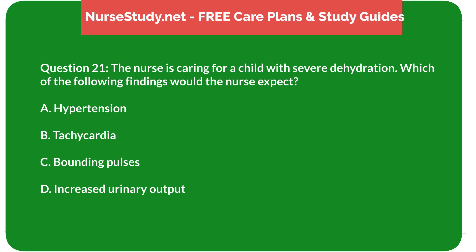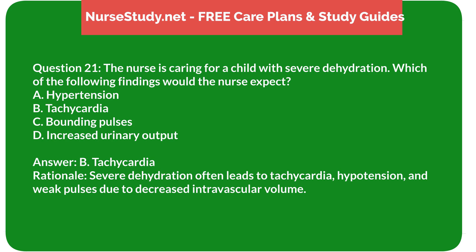Question 21: The nurse is caring for a child with severe dehydration. Which of the following findings would the nurse expect? A) hypertension, B) tachycardia, C) bounding pulses, D) increased urinary output. Answer: B) tachycardia. Rationale: Severe dehydration often leads to tachycardia, hypotension, and weak pulses due to decreased intravascular volume.